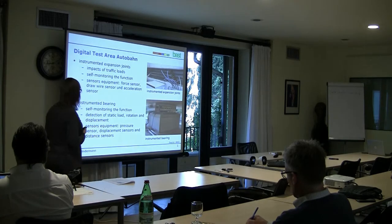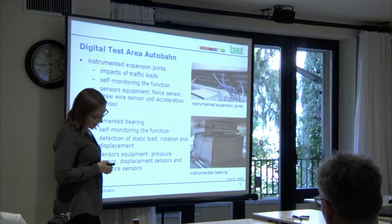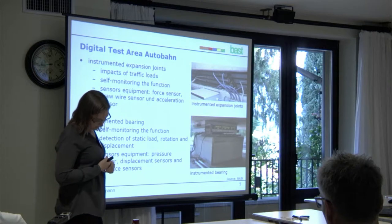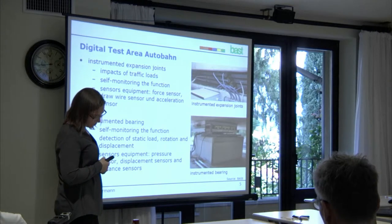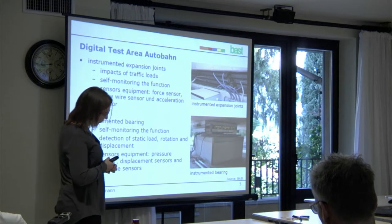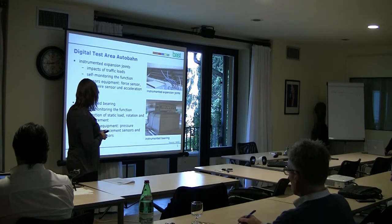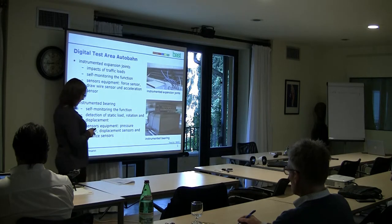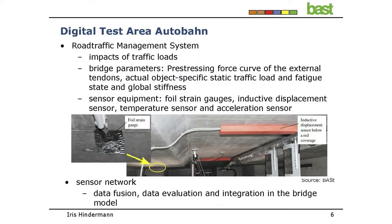The instrumented bearing also features self-monitoring of function, and enables detection of static load, rotation, and displacement. Pressure sensors are used for the detection of static load, displacement sensors are used for detecting changes in the path and gap of the bearing, and distance sensors are used for the rotation. Another monitoring system is the road traffic management system, which detects the impact of traffic loads using strain gauges.